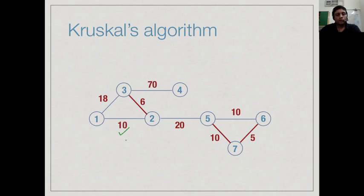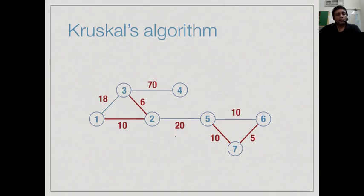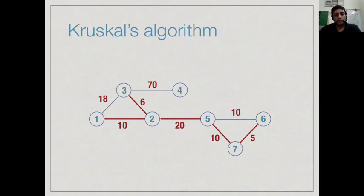We discard the cycle-forming edge of weight 10 and move to the next one, which we can add. Now we have finished the 10s. The next one is 18, but adding 18 is going to form a cycle, so we discard it. We go to the next one which is 20, and we add it. We have added 1, 2, 3, 4, 5 edges and we need 6 because we have 7 vertices totally — we need n minus 1 edges. The only edge left is 70, so we add that. This is the spanning tree formed by Kruskal's algorithm; we scanned through all edges and dropped a couple along the way.